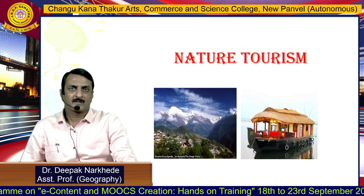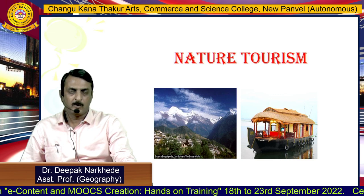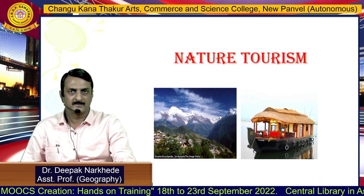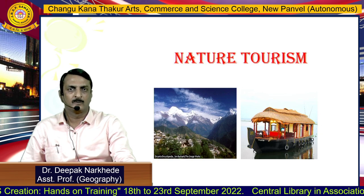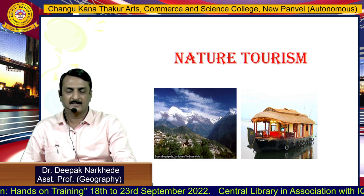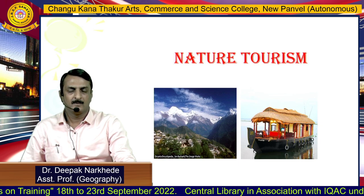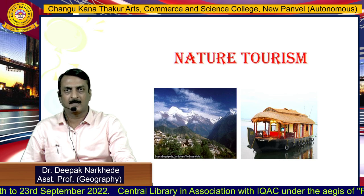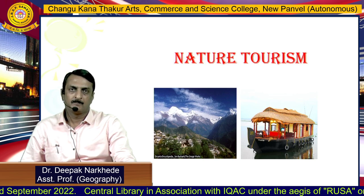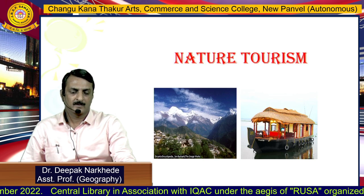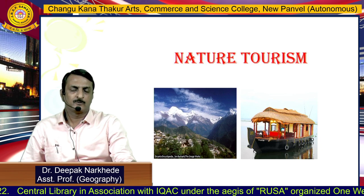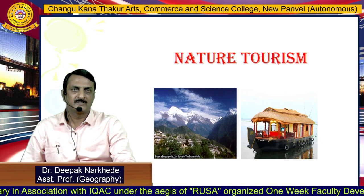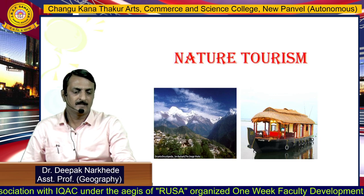The second type is nature tourism, where people who are in love with nature visit natural places. In this picture you can see photographs of the Himalayas, where people not only from India but from all over the world visit due to their natural beauty. The second photograph on the right side shows Kerala, where people visit to see the scenic beauty.